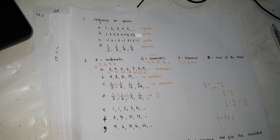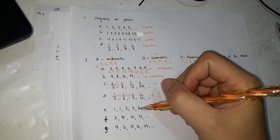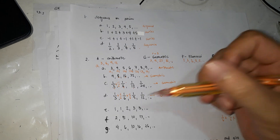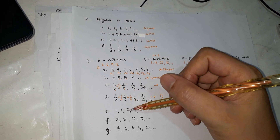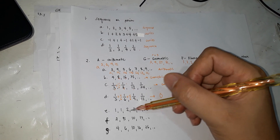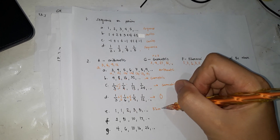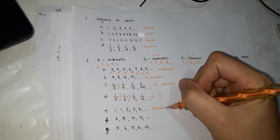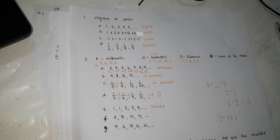Letter E: 1, 1, 2, 3, 5. It's clear: 1 plus 1 is 2, 1 plus 2 is 3, 2 plus 3 is 5. When you add the previous two terms to get the next, that's a Fibonacci sequence.